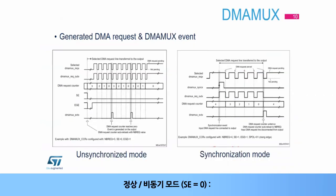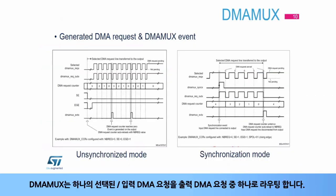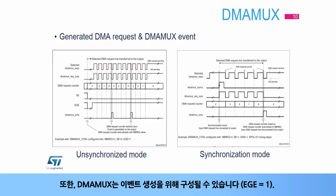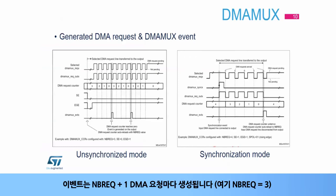In normal or unsynchronized mode (SE = 0), DMA MUX is routing one selected input DMA request to one of its output DMA requests. On top of that, DMA MUX may be configured for generating an event (EGE = 1). An event is generated every NBREQ + 1 DMA requests. Here, NBREQ equals three.